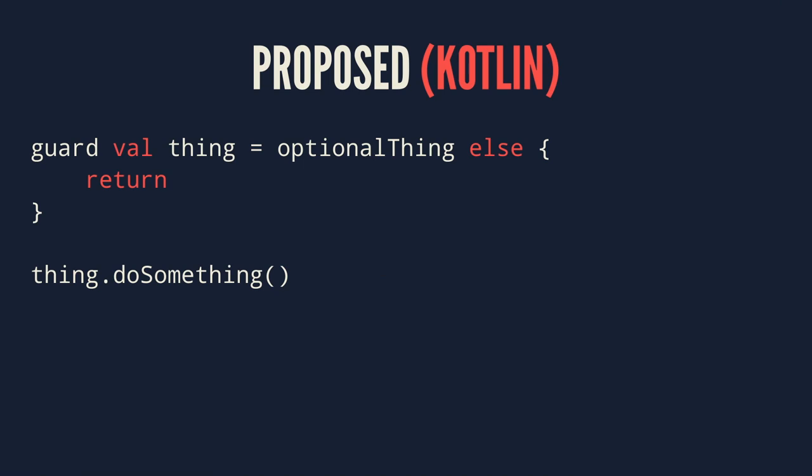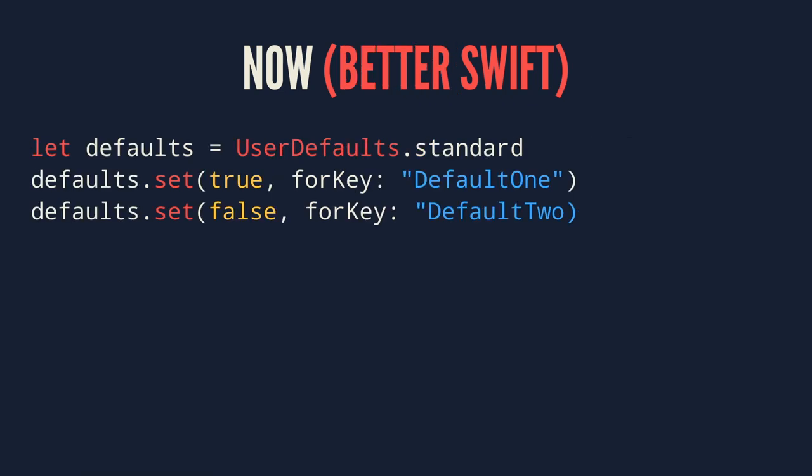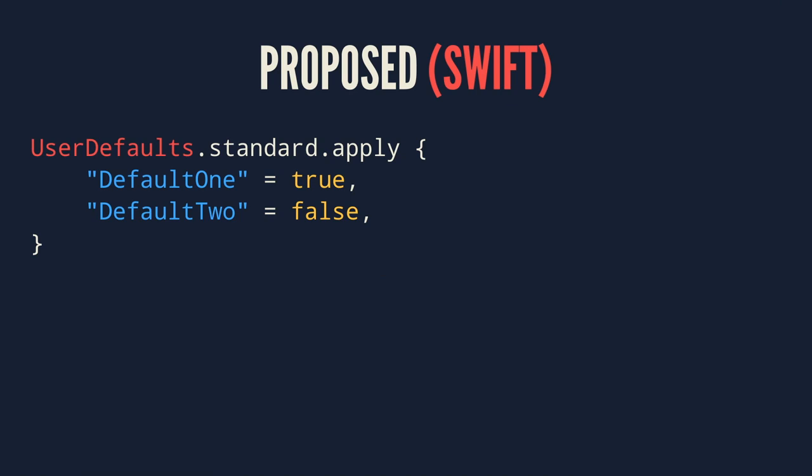There's a nice thing that Kotlin does as well that I think Swift should steal, which is the apply function. Right now in Swift, if you have a single instance of something — especially if it's a singleton — which you want to apply multiple things to, you either have to access that singleton in full for every single one of those actions, or pull it into a single variable and repeatedly access that variable. What the apply function in Kotlin would allow you to do is set values in a single closure on the given type. It's a little bit of an adjustment reading things this way, but once you make the adjustment, it can actually be really, really helpful.